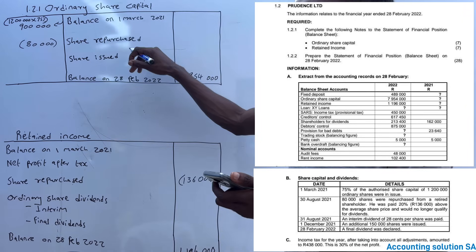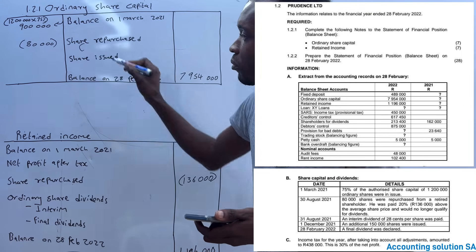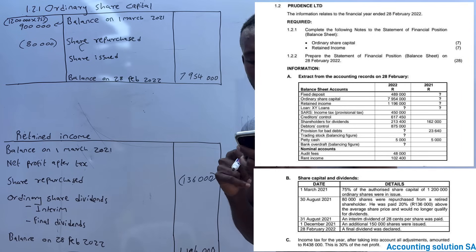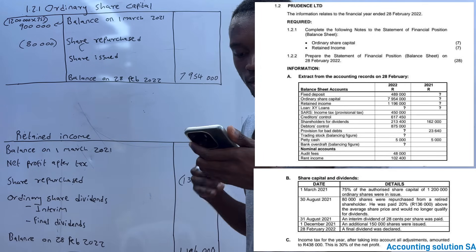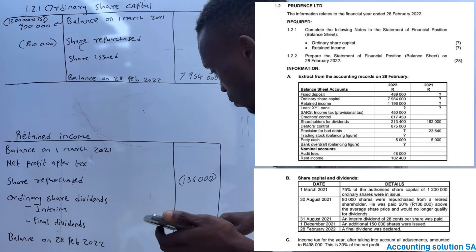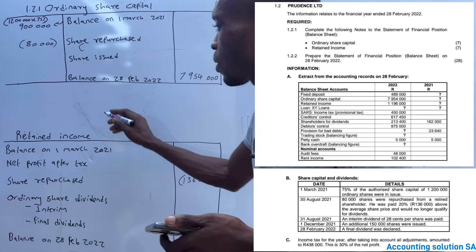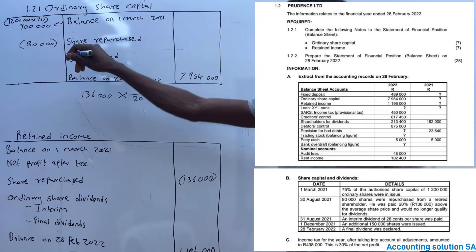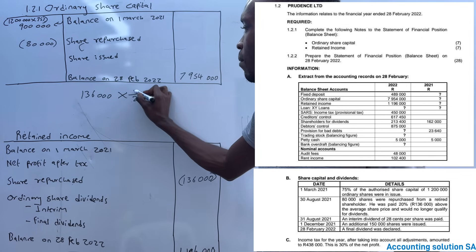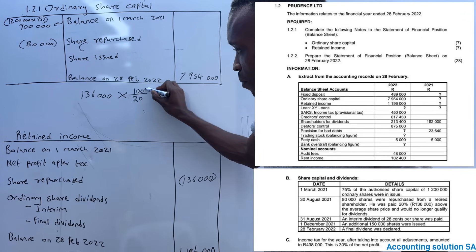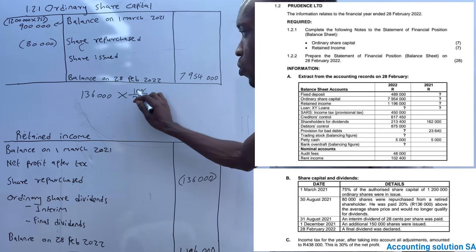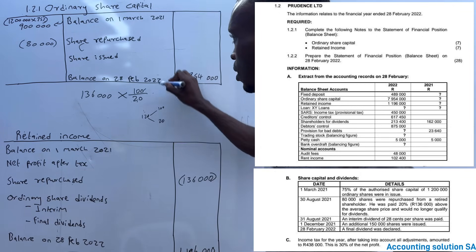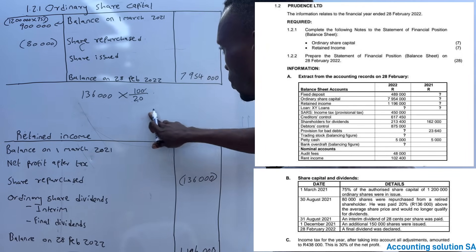Now we don't know the average price, so we can't find the repurchase amount in ordinary share capital yet. The next transactions mention interim dividends and additional shares with no price, so we can find the average price using the 136,000. Remember, 136,000 is 20% of the normal average price. To find the average price we multiply by 100/20 - we're not looking for the total (which would use 120), but just the average portion.